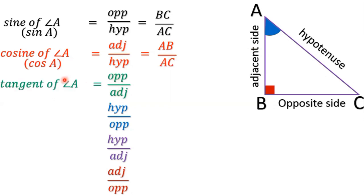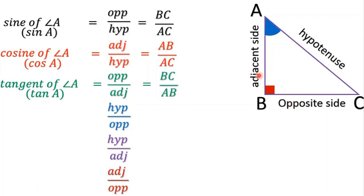The ratio opposite by adjacent is given the name tangent of angle A, short form tan A. In the figure, the opposite side is BC and the adjacent side is AB. So opposite by adjacent is equal to BC by AB.